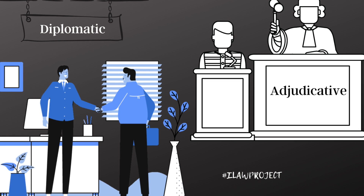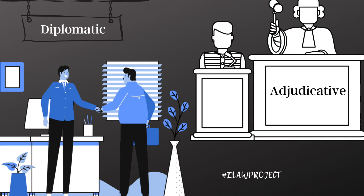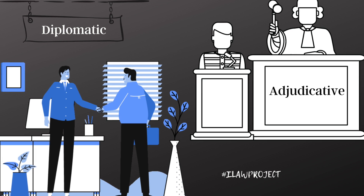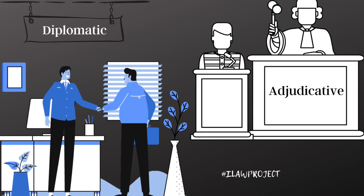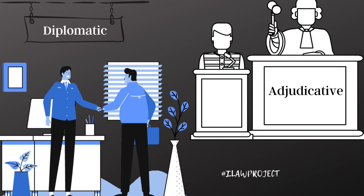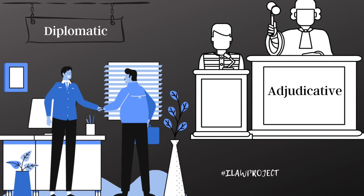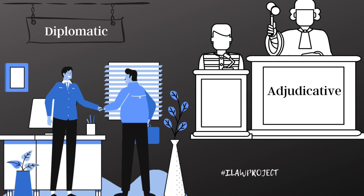Because there are a number of tribunals under international law, it is essential to distinguish which bodies are political, administrative, or judicial. To determine if a body is judicial in nature, its procedures have to be examined. When you begin to unpack this, you will realize that there are a number of bodies set up for judicial settlement under international law. But the ICJ holds its place as the principal judicial organ of the United Nations.